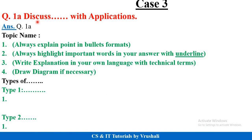Suppose the next question is 'discuss with application.' Discuss and explain are almost the same, so write the discussion in proper bullets format and write down their applications like point 1, point 2, point 3. Suppose they have asked about types — give the heading, for example 'types of queue data structure,' then type 1, type 2, and so on. You need to solve the question paper smartly.